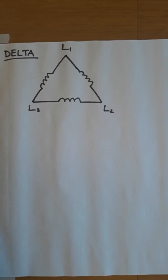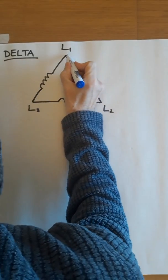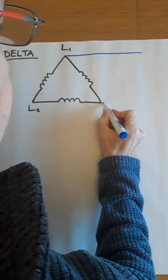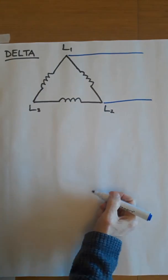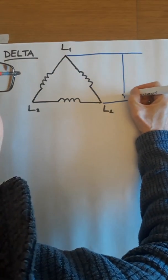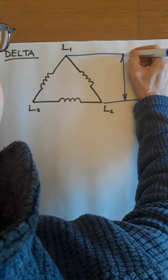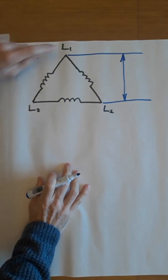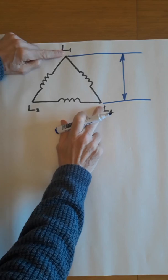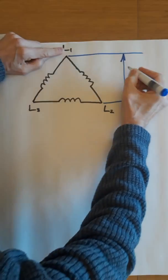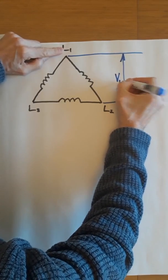If we first look at the voltages, then if we take a connection from L1 and L2, if we measure this voltage, we have gone from one line to another line, L1 to L2. That makes this the line voltage, VL.